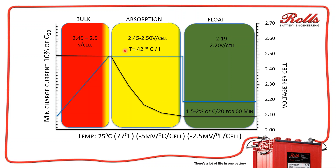I want to talk about the absorption time formula. About 15 years ago, Surette-Rolls did a study at the plant on how to determine absorption time. The way absorption time was determined back then is you started to charge, watched the voltage until you hit the set point, then started a stopwatch and watched the current until it went below 1.5 to 2 percent of the C20 rate for a full 60 minutes. When it went below that for a full 60 minutes, you stopped the stopwatch and that's what you programmed for the absorption time.